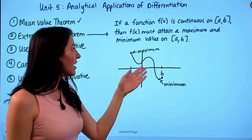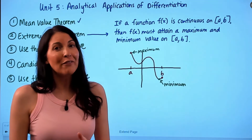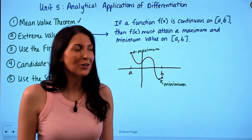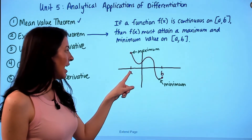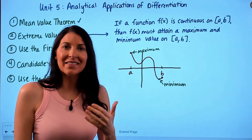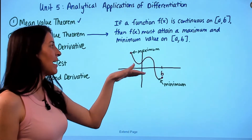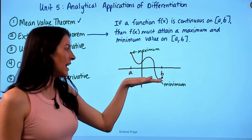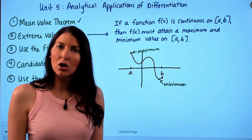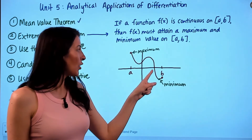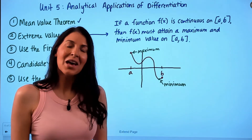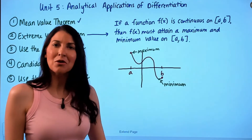Looking at the graph, the function f(x) does not need to be differentiable for the Extreme Value Theorem. It's okay if the function has a sharp turn, a cusp, or a vertical tangent line. As long as f(x) is continuous on [a, b], we are guaranteed — that's why this is an existence theorem — that the function will have an absolute maximum point and an absolute minimum point. Those absolute extrema can occur at endpoints or at critical points, which are also known as relative maximums or minimums.